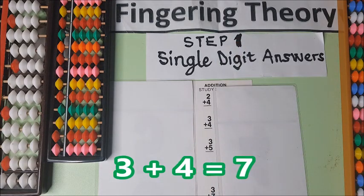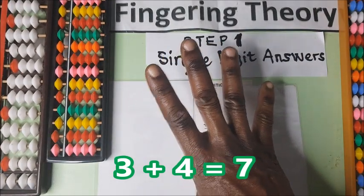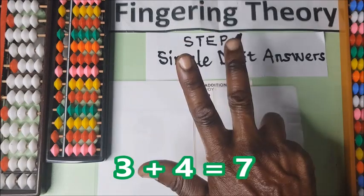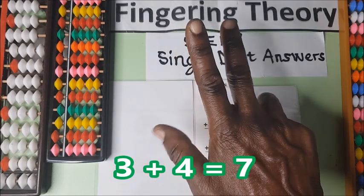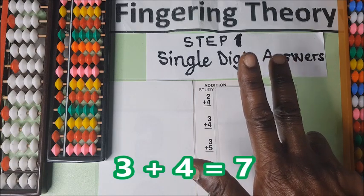We have 4 plus 3. Go to the larger number first, which is 4 plus 3. 1, 2, 3. 5 plus 2 is 7. So 3 plus 4 is 7.